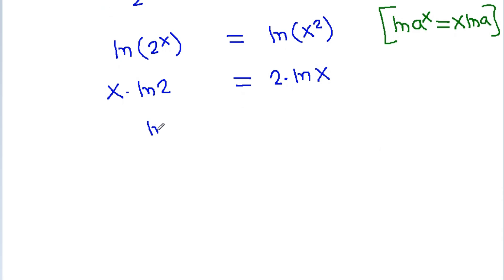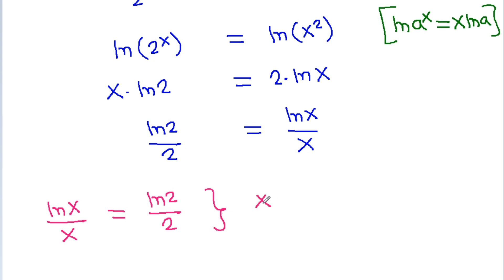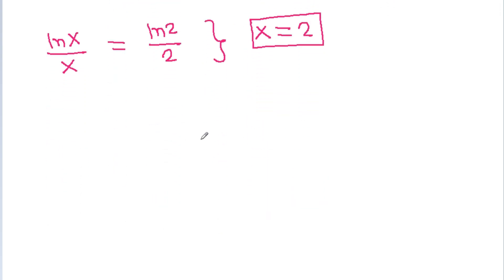So, ln 2 by 2 it will be equal to ln x by x. So, we get ln x by x is equal to ln 2 by 2, and if we compare both sides of the equation, then we can get x is equal to 2.